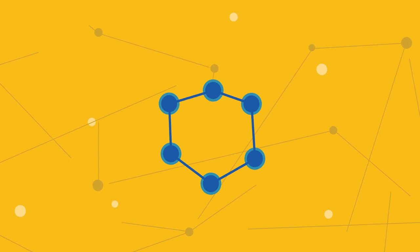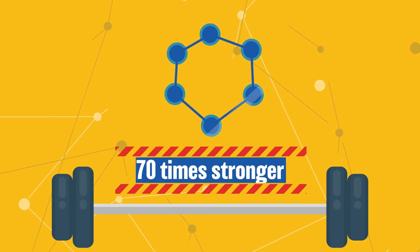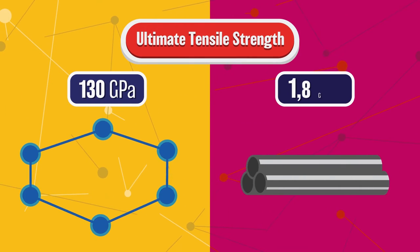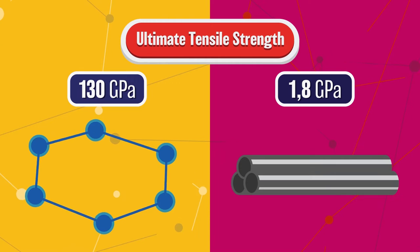But in relation to its thickness, graphene is about 70 times stronger than the strongest steel. Graphene has an ultimate tensile strength of 130 gigapascals, compared to 1.8 gigapascals of high tensile wrought steel used in pre-stressed structures.